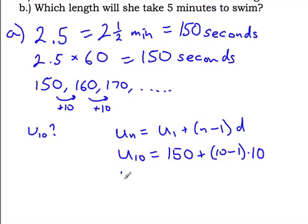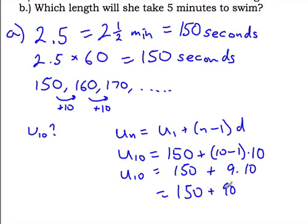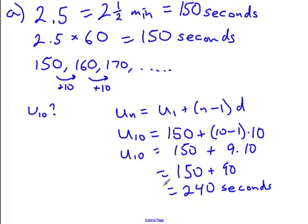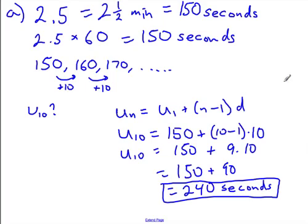We simplify to get 150 plus 9 times 10, which is 150 plus 90, which equals 240 seconds. So on the 10th length, she will have a time of 240 seconds. That's the answer to part A.